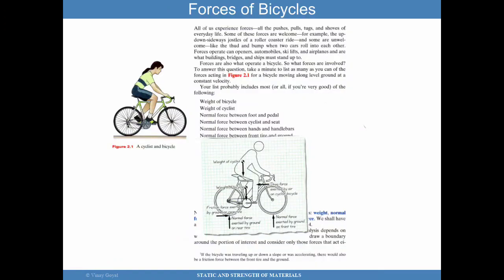In this picture, we see the types of forces acting on a bicycle. You have the weight of the bicycle and the cyclist, normal forces between the foot and the pedal, between the cyclist and the seat, between the hands and the handlebar, and between the tire and the ground. These forces, including frictional forces, need to be balanced for the system to be in equilibrium. All this can be extended to automobiles, ski lifts, airplanes, buildings, bridges, and ships — they all have to be in equilibrium.